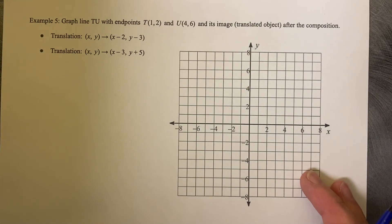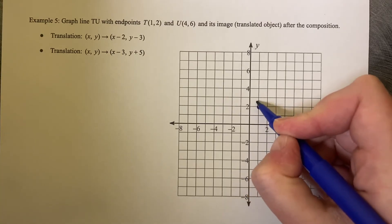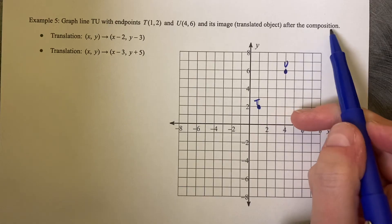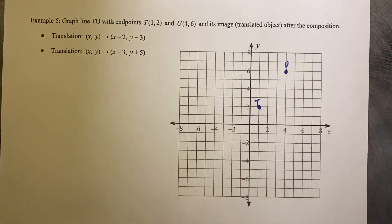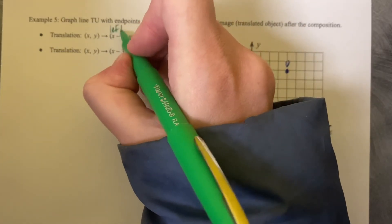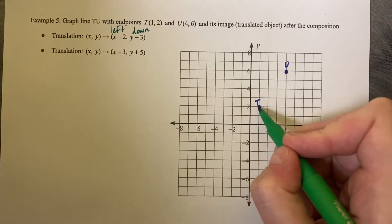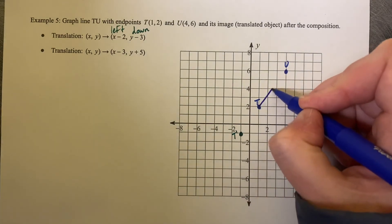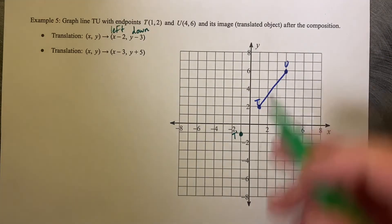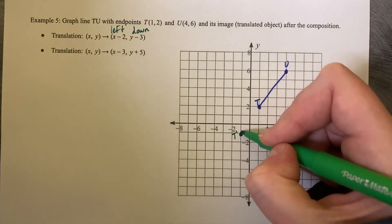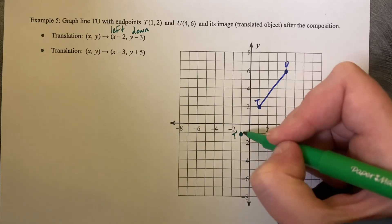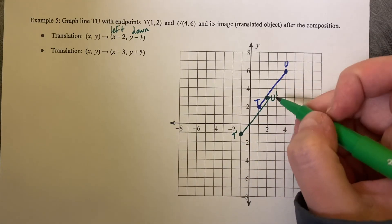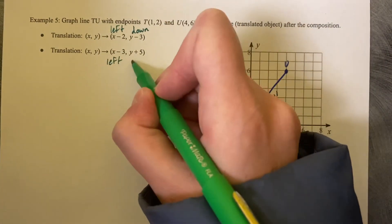Example five. Graph the line TU with endpoints (1,2) and U at (4,6). And now we'd like to make a composition of translations. So first we'd like to go left two. This is left two and down three. So left two and down three. So that's T prime. And we can use our slope. I should have connected this line. This is our line TU. And we can use our slope to help us. So if we go up four and right three, we can get to U. So up four and right three.